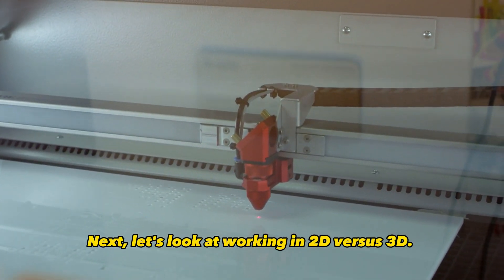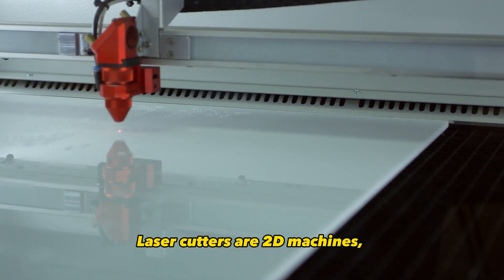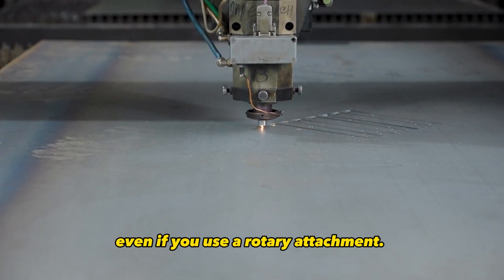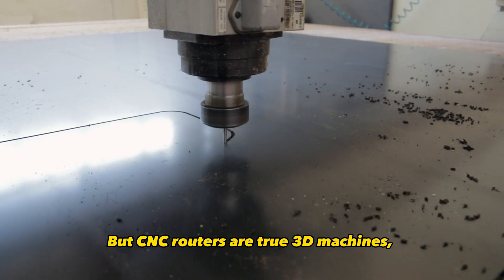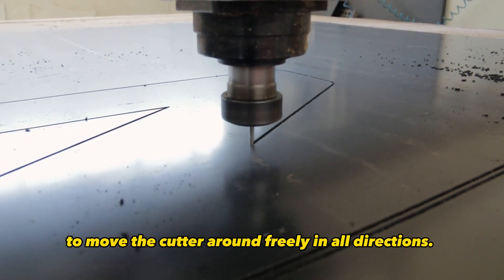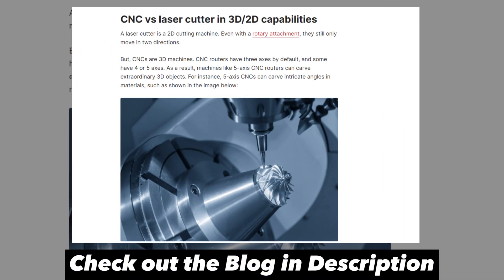Next, let's look at working in 2D versus 3D. Laser cutters are 2D machines, only cutting vertically down, even if you use a rotary attachment. But CNC routers are true 3D machines, with three or more axes to move the cutter around freely in all directions. This allows complex 3D shapes to be carved out of material, like this 5-axis machining example.